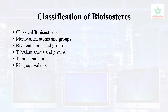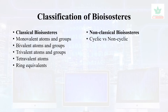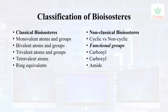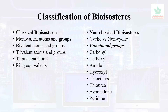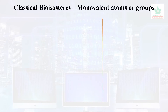Let us see the classification of bioisosteres. There are two types: classical bioisosteres — which include monovalent atoms or groups, bivalent atoms or groups, trivalent, tetravalent, and ring equivalents — and non-classical bioisosteres, which include cyclic versus non-cyclic functional groups such as carbonyl, carboxyl, amide, hydroxyl, thioethers, thiourea, and azomethane.